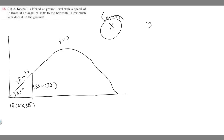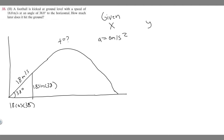Now let's write down our givens. In the x direction, acceleration is 0 — that's almost always the case. Delta x, how much it travels from beginning to end, we don't know. We also don't know the time. But we do know the initial velocity: it's 18 times the cosine of 38 meters per second.